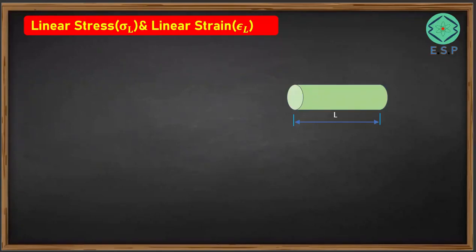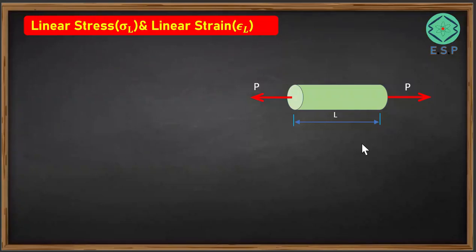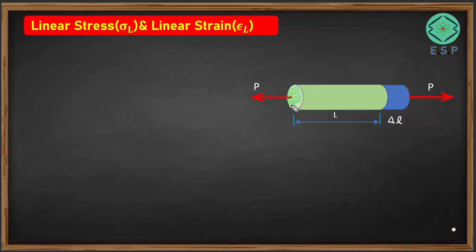Suppose we have a member subjected to a tensile load P. When you apply the tensile load it is going to deform along its length. Delta L is the elongation in the length of this particular member due to application of tensile load P. The cross-sectional area of the member is called A.